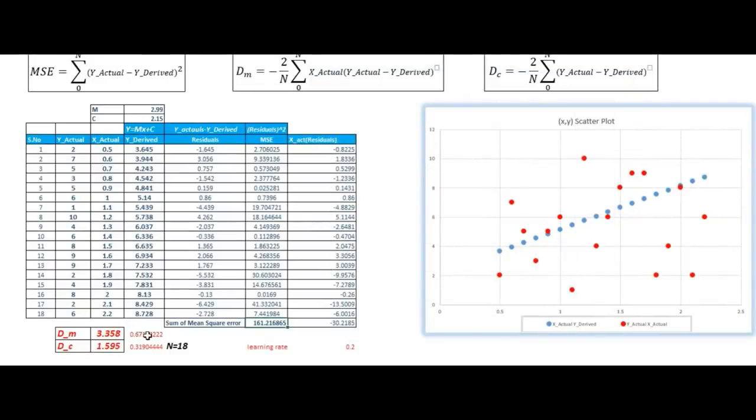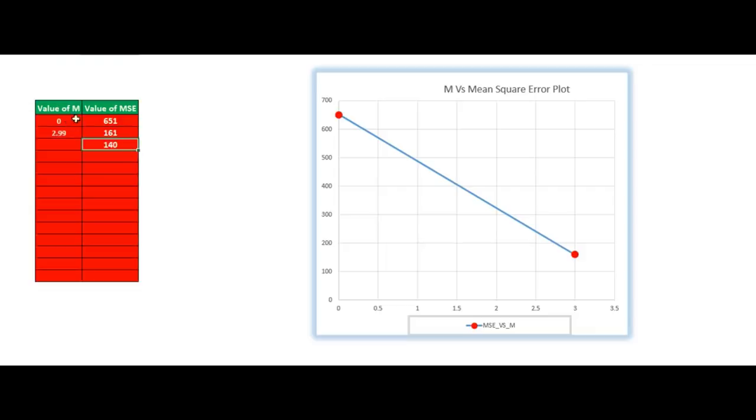So now we have again got the second values that is dm is 0.67 and dc is 0.31. So now we have to reduce these values from these two numbers and check out how much error we are getting. I have put down those values 1.65 and 1.53 after reducing these numbers around 140 mean square error. So you can see that after each and every further steps, we are getting a decrease in mean square error.